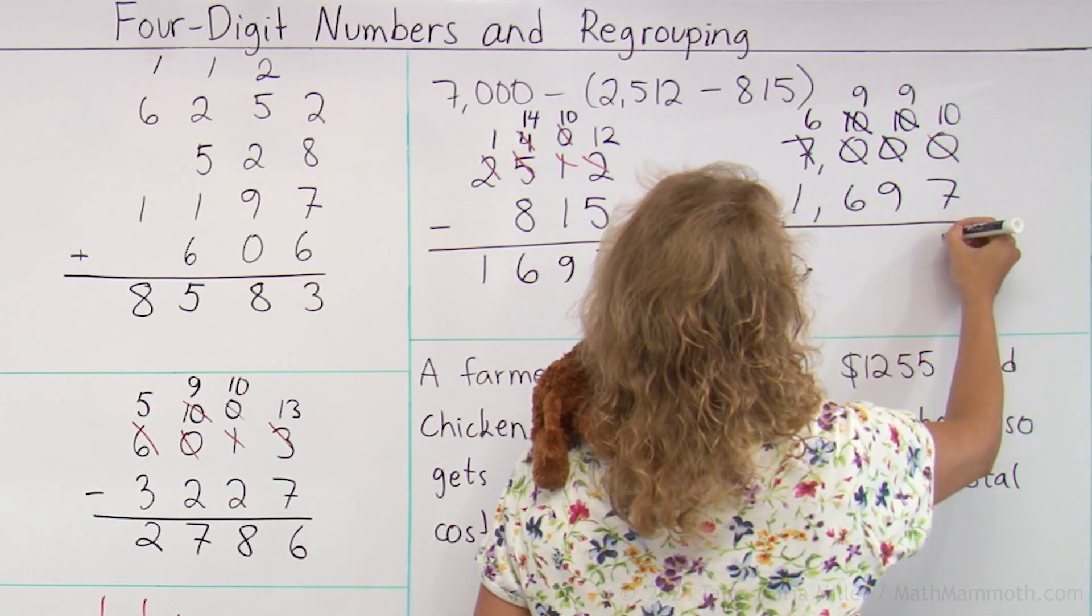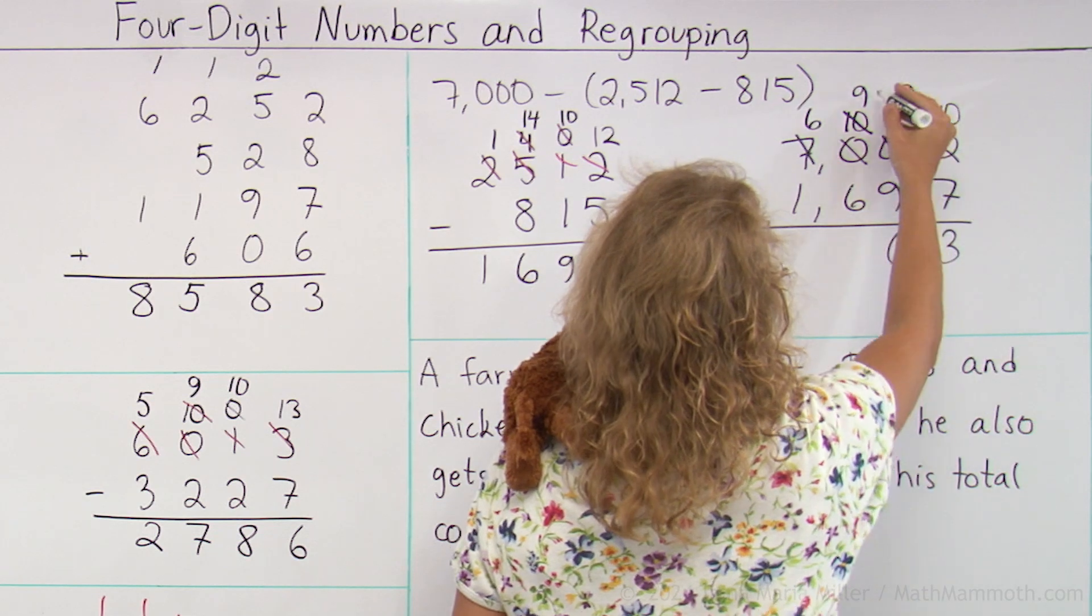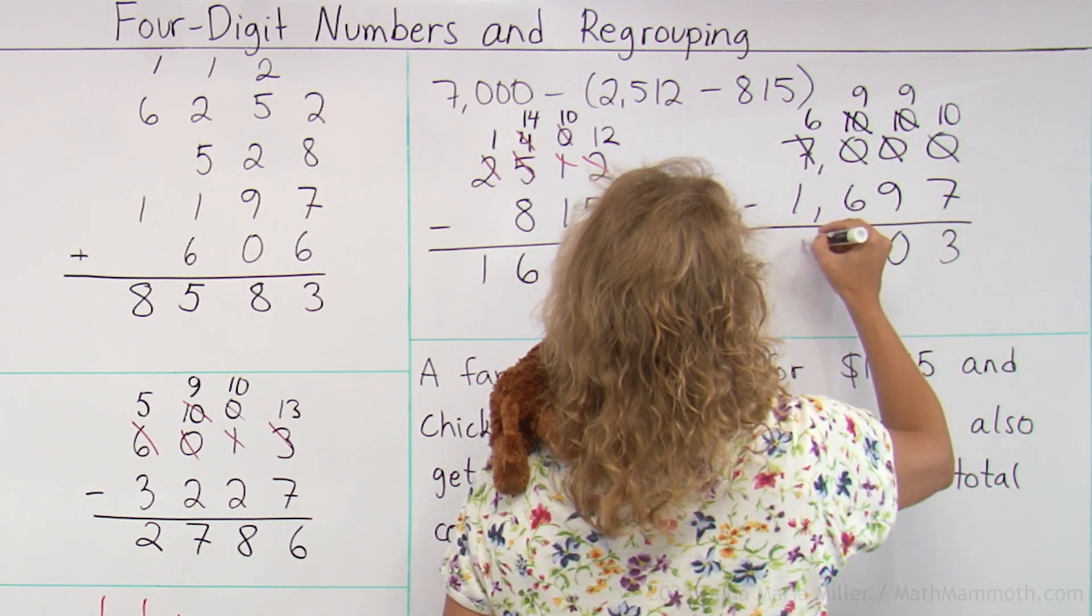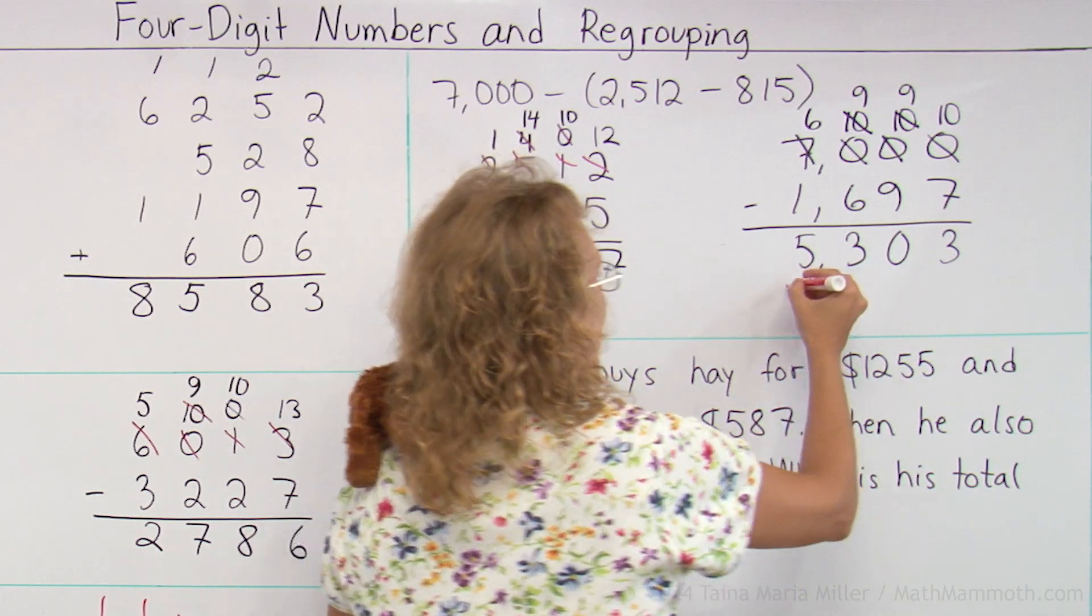Ten minus seven is three. Then nine minus nine. Nine minus six. And six minus one. So that's the final answer.